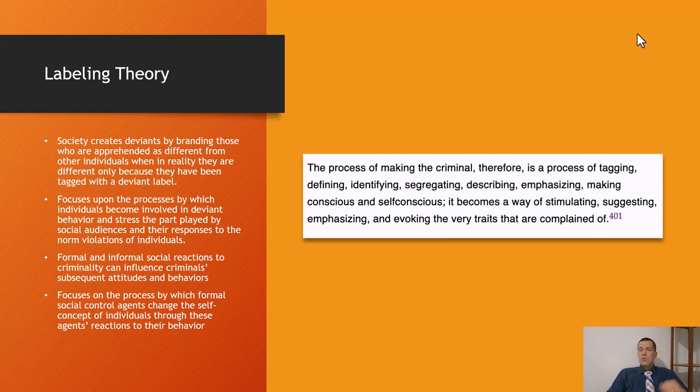So how much do people internalize labels from society? Your book describes it as society creating deviance by branding those who are apprehended as different. We label those that deviate from social norms — we stigmatize them with words and labels. Specifically regarding juvenile delinquency, we label someone a delinquent. Where does that labeling come from? What if a kid is having problems at home, starts skipping school, gets picked up for unruliness, and gets labeled a criminal?